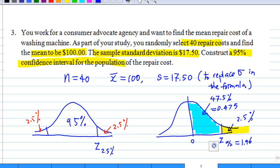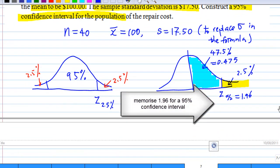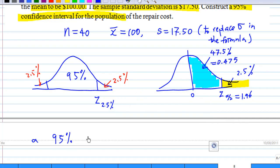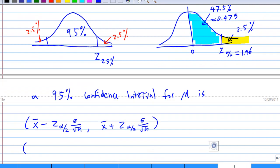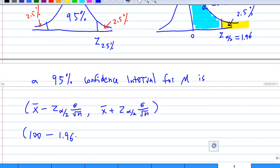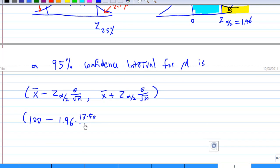Now we are ready to compute the confidence interval for μ. A 95% confidence interval for μ is: x̄ - z_{α/2} × (σ/√n) to x̄ + z_{α/2} × (σ/√n). We know x̄ = 100 and z_{α/2} = 1.96. σ we don't know, but we can use the sample standard deviation 17.50 to replace it, and n = 40.